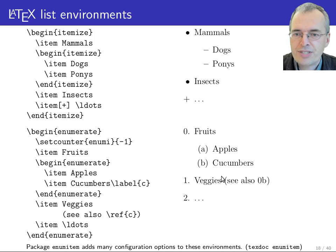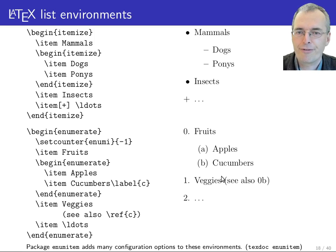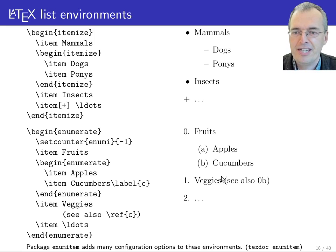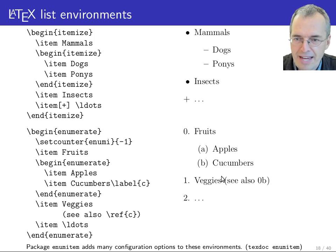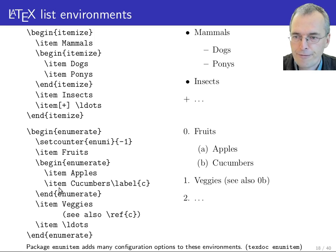For enumerate items, if you want to refer to a particular item you shouldn't do this manually — for example, writing 'as we've seen above in item 4' — because later you might edit that item and everything gets renumbered. Instead, when there is an item you want to refer to by number, you declare a label for that item.